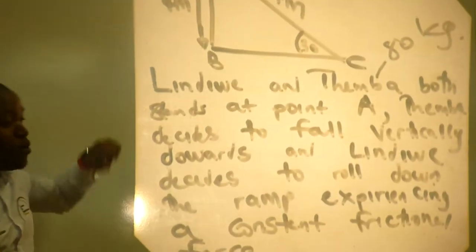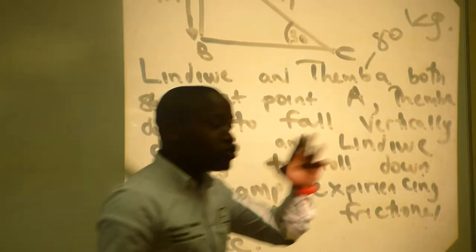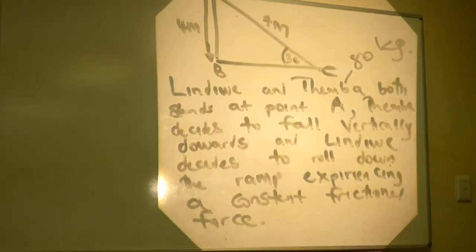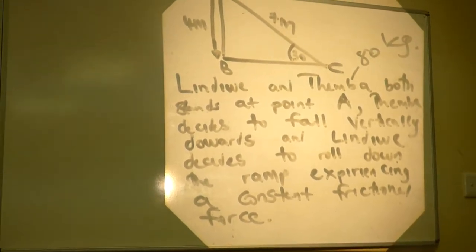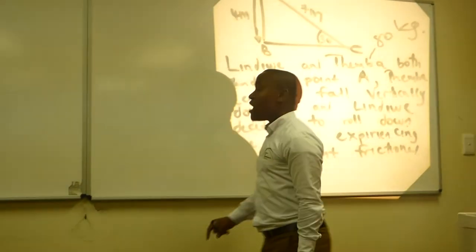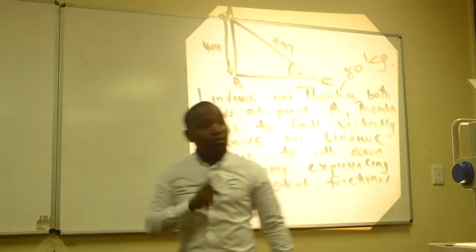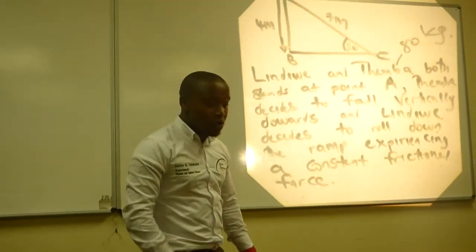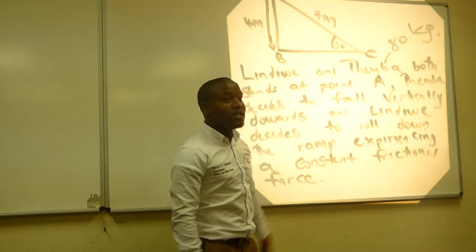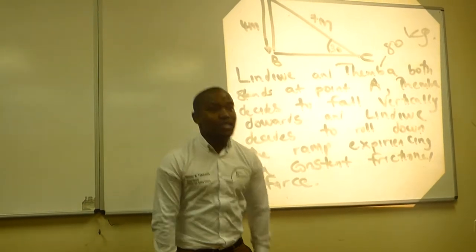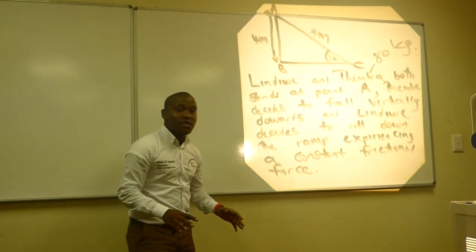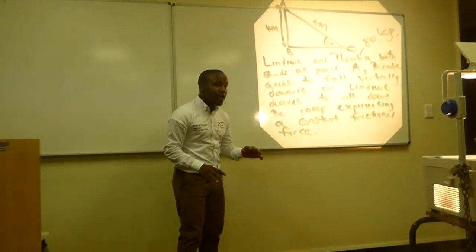Lin Duwe and Temba both stand at point A on top of the ramp. Remember, Lin Duwe is a lady and Temba is a guy. Temba decides to take a risk and fall directly from point A to point B, vertically. Lin Duwe is a little bit frightened, so Lin Duwe rolls down the ramp slowly.